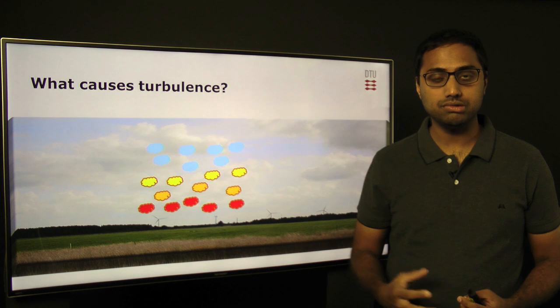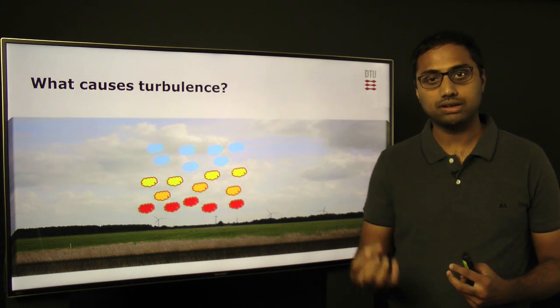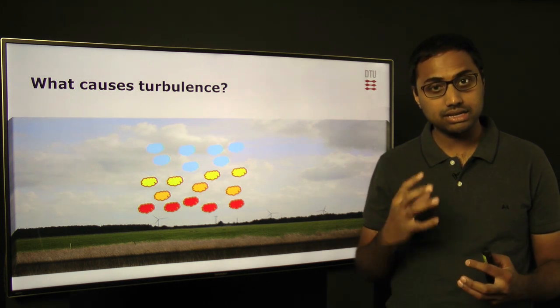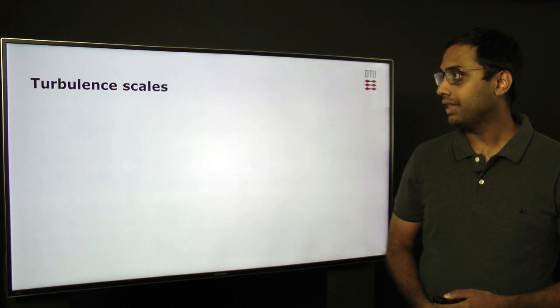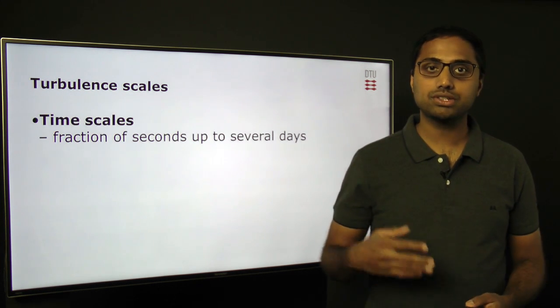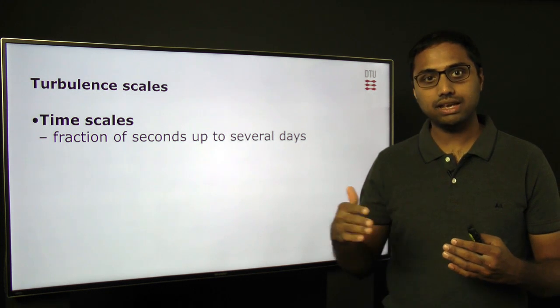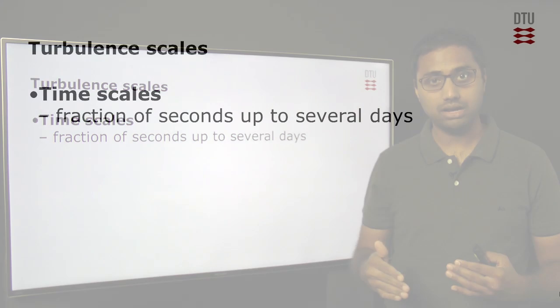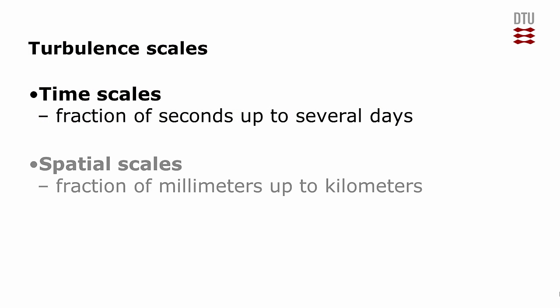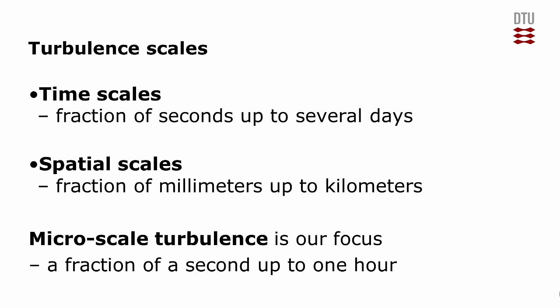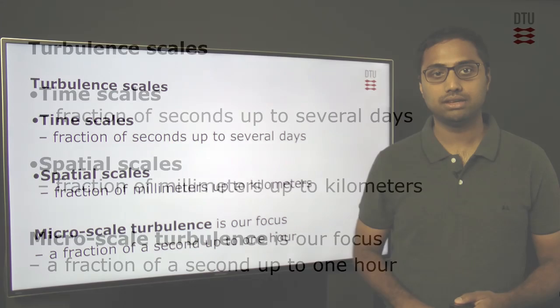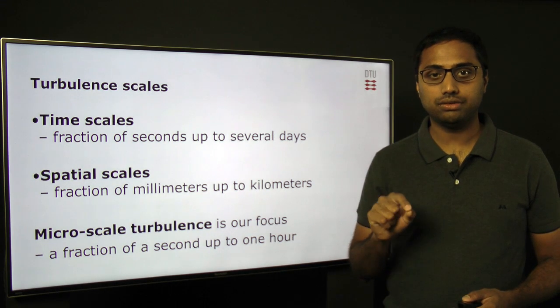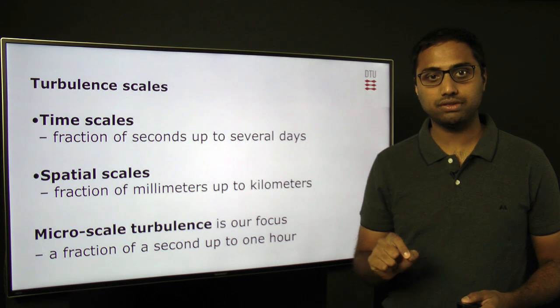One can think of the example of a hot air balloon on a warm day, which rises because the temperature of the air inside the balloon is much warmer. Regarding turbulence scales, we can talk about velocity variations from a fraction of a second up to several days, or spatial variations from fractions of millimeters to kilometers. In this lecture and the following one, the focus will be on microscale turbulence — that is, variation of velocity from a fraction of a second up to one hour.